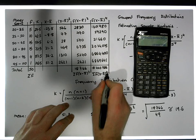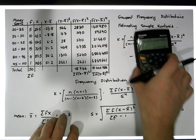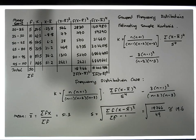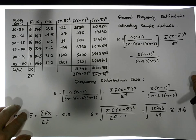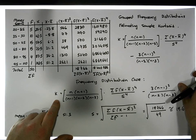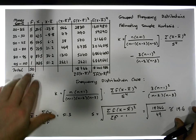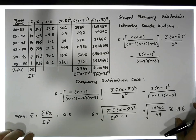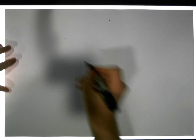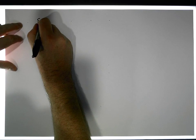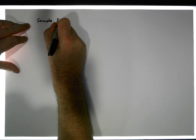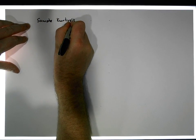Now we have everything, so let's start our calculation. We want to calculate the sample kurtosis — how peaked or how flat this particular distribution is from a numerical perspective. We can now do the calculation, so I'll just rewrite down the formula for sample kurtosis.